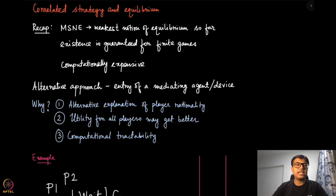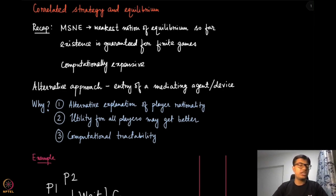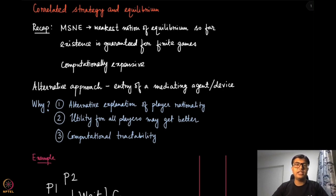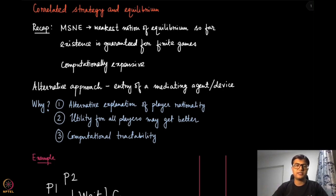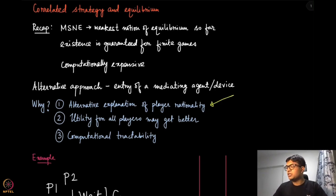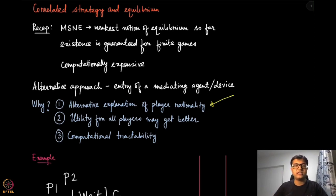This actually helps us give some sort of alternative explanation of player rationality. There are certain situations where it is not meaningful to ask players to take decisions independently; rather they can collectively decide, even if it is via a mediating device or randomization device like the coin. This is the motivation through which we define correlated strategy and its equilibrium.